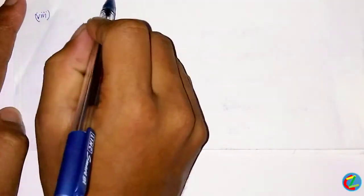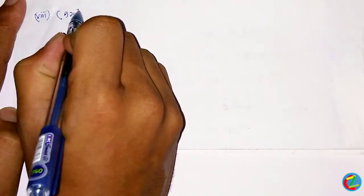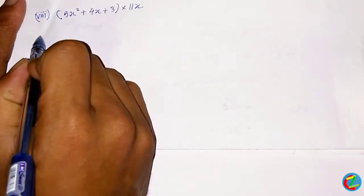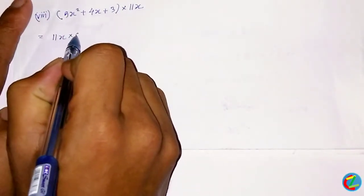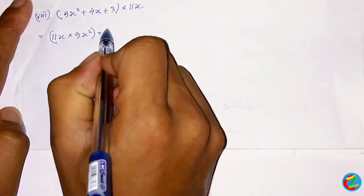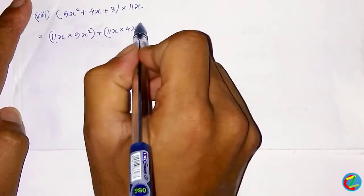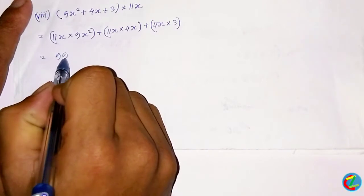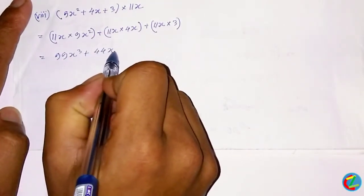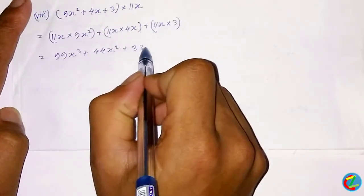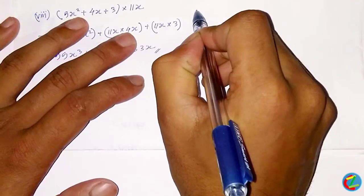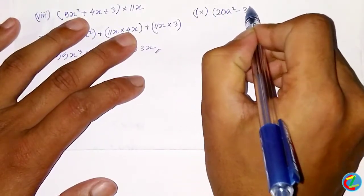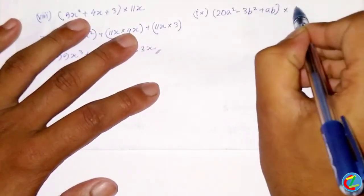9x square plus 4x plus 3 whole into 11x. 11x into 9x square plus 11x into 4x plus 11x into 3. This gives us 99x cubed plus 44x squared plus 33x.